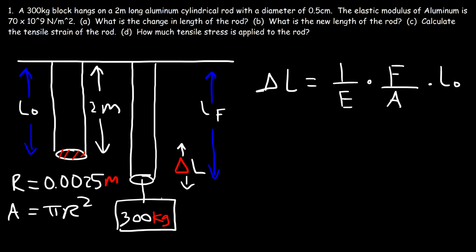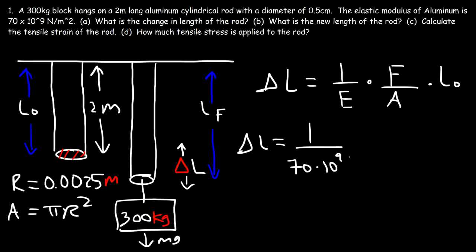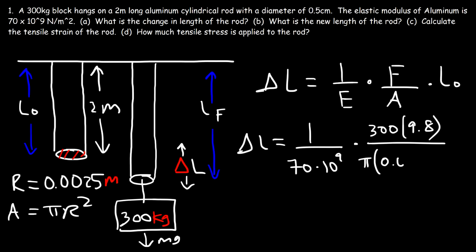The force is basically the weight force of this object — it's equal to mg. So delta L is going to be 1 over E, the elastic modulus, which is 70 times 10 to the 9, multiplied by the force mg — that's 300 kilograms times 9.8 — divided by the area pi r squared, so pi times 0.0025 squared, multiplied by the initial length of the rod, which is 2 meters.